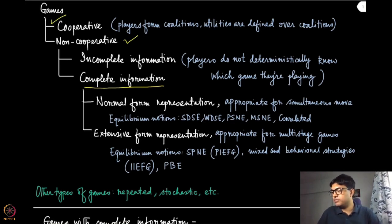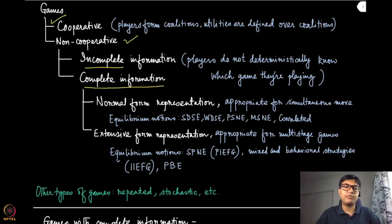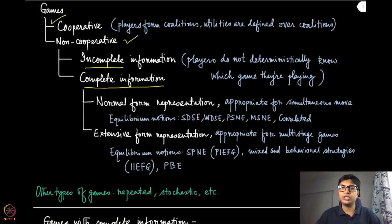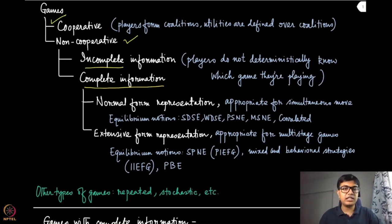From this module onwards we are going to discuss what is known as incomplete information games. So even though in the previous examples — be it perfect information or imperfect information — the players actually knew which game they were playing. They might not have observed certain states of the game, but they at least knew what the game tree or game matrix was. In the incomplete information setting, players do not deterministically know which game they are playing; they might have a probabilistic belief about it. There are other types of games like repeated games and stochastic games which we will not discuss here.